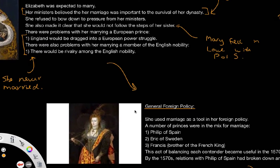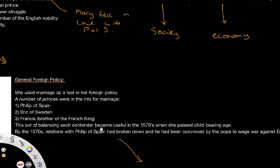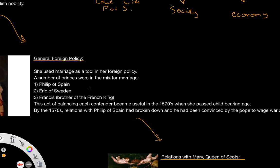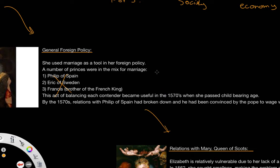Moving on to her foreign policy, Elizabeth used the prospect of marriage as a tool. She could gain favour with different princes and members of European monarchies to get what she wanted. There were a number of suitors: Philip of Spain (Mary's ex-husband), Eric of Sweden, and Francis, the brother of the king of France. Elizabeth wasn't inclined to marry any of them — she used them as a tool, balancing each contender, and this became especially useful as she passed childbearing age around the 1570s.